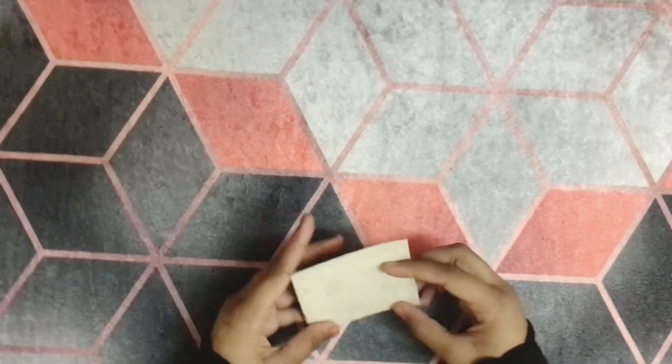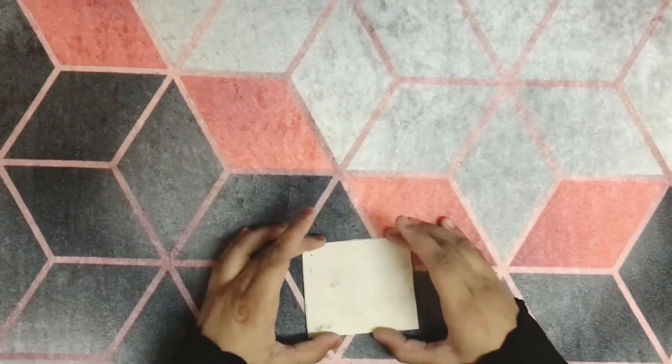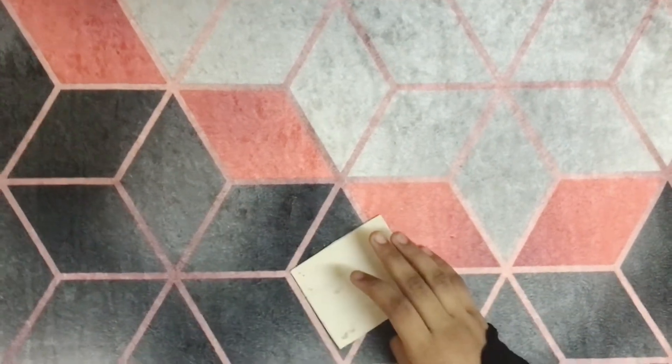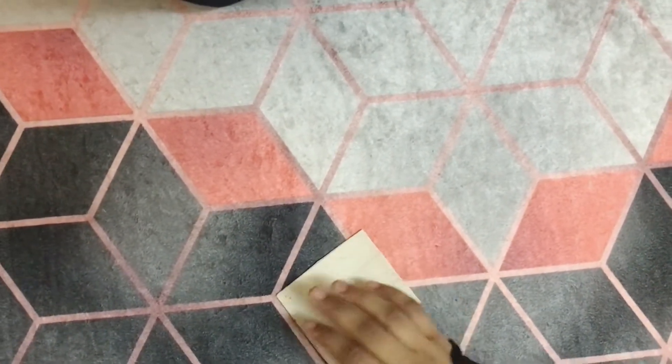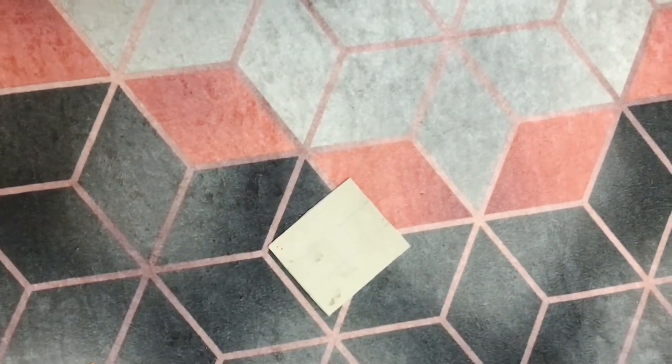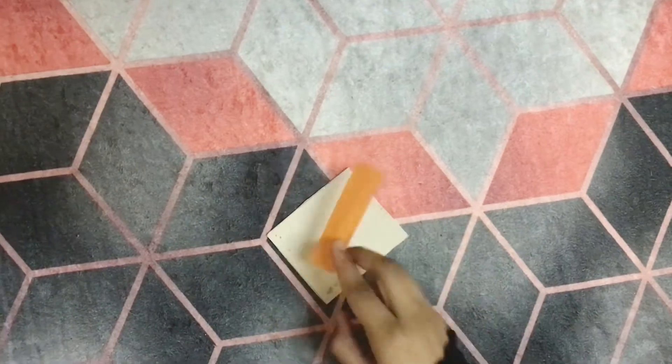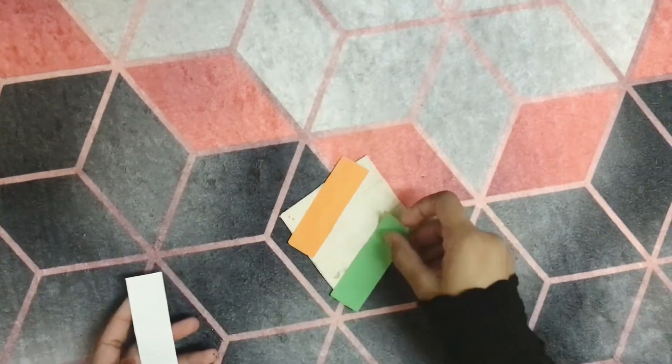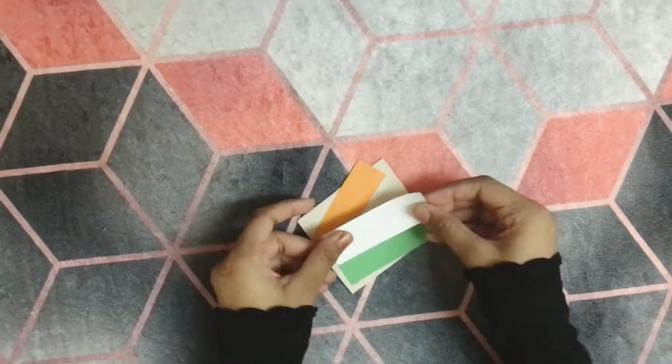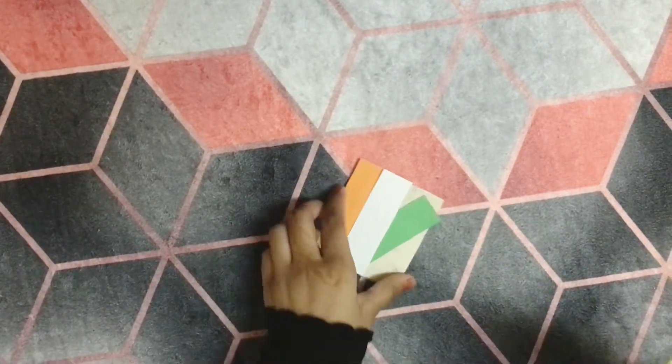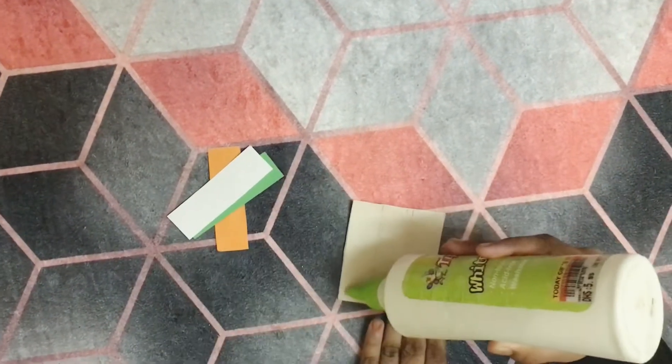Then I am taking a cardboard which I have cut out from an old notebook. Then I am taking orange color paper, green color paper and white paper, and I am going to stick it on the cardboard.